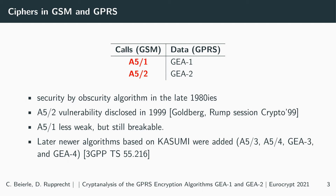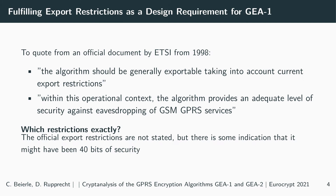About the voice algorithms A51 and A52, we know a lot, as they were reverse engineered early on. Already in 1999, A52 was broken by Ian Goldberg and David Wagner. A51 is less weak but still breakable. Later on, four additional algorithms were added to 2G based on Kasumi.